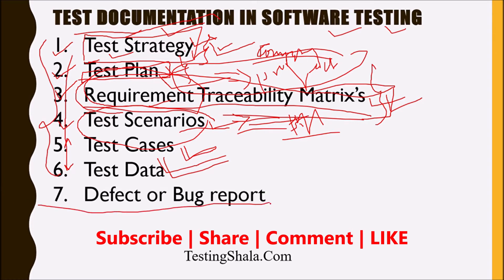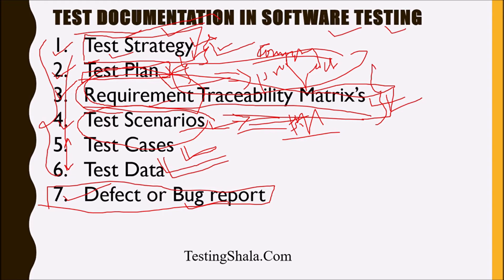The next documentation we create is the defect or bug report. As and when we find an issue during testing, we log the defect or bug in the system, which gives us transparency. If some issue comes from the client, we can go back to the defect report and validate whether the tester identified similar defects earlier or whether that defect was deprioritized or neglected. All this analysis can be done using defect or bug reports, and this documentation is very important.